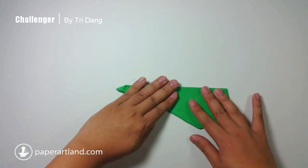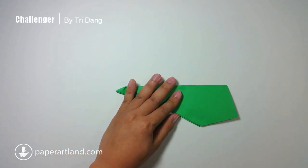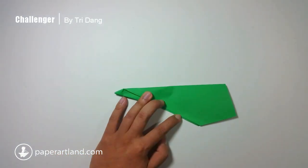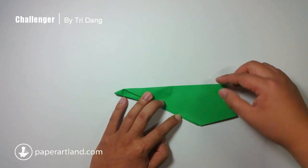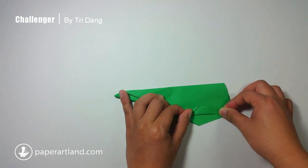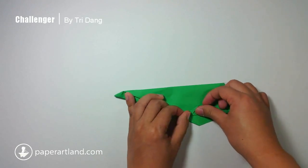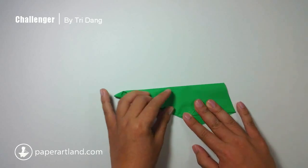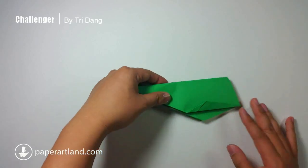And then, turn the paper this way. Next step, I am going to create the stabilizer. Here, I imagine that I have a line from this edge straight to this corner, and it needs to be parallel with this edge. And then, I repeat the same fold for the other side.